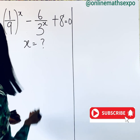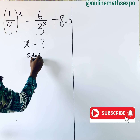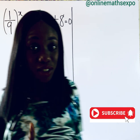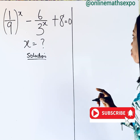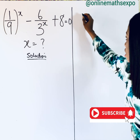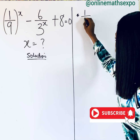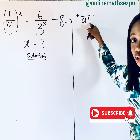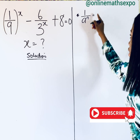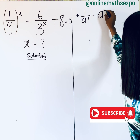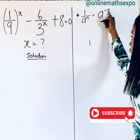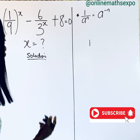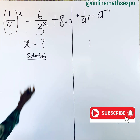We begin with the solution. But before then, let me remind you of some important tips, which says that if you have 1 over a to the power of n, according to exponential rule, it means you are going to have a to the power of negative 1. Now we're going to see how useful this can be as we solve.